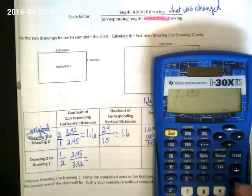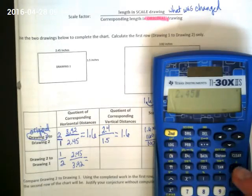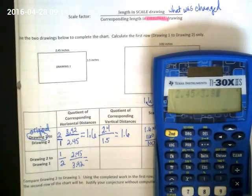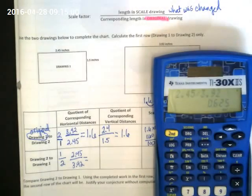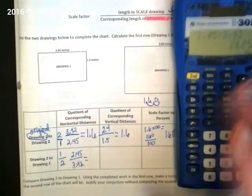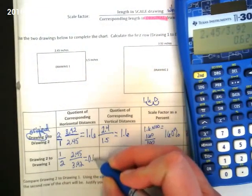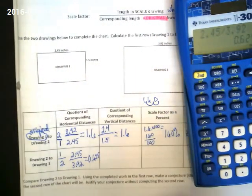Should we be getting a number over 100 or under 100? And I got 0.625, which is under the number 1, which means it's under 100%.